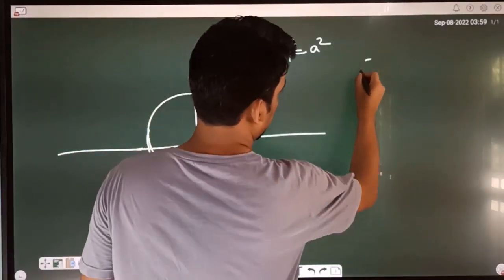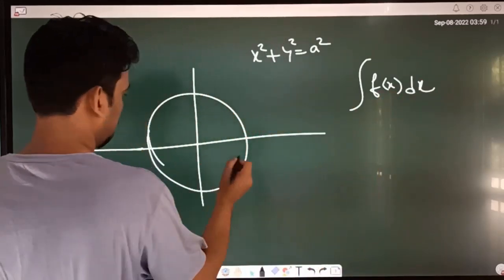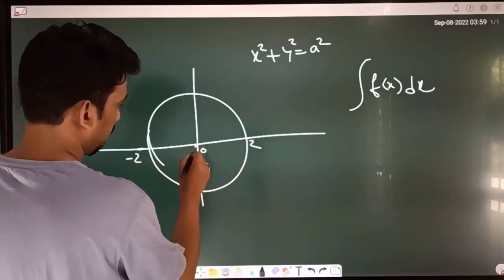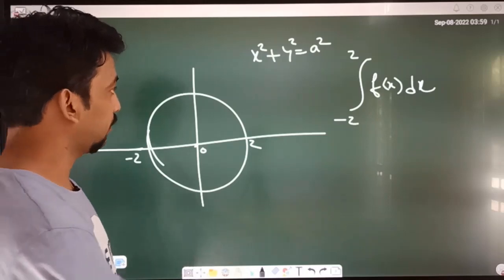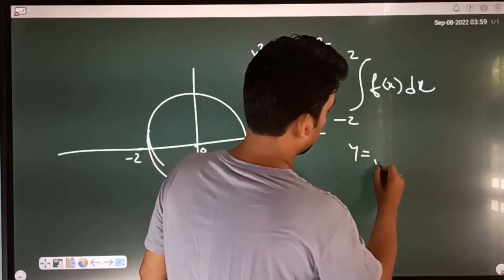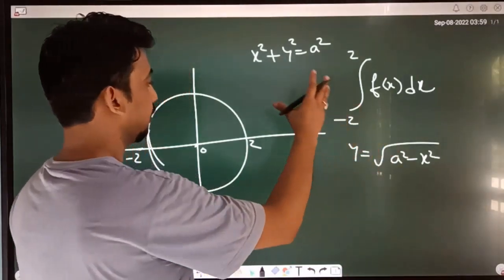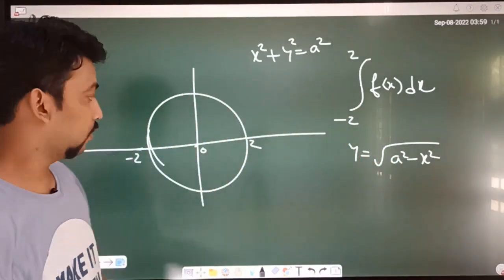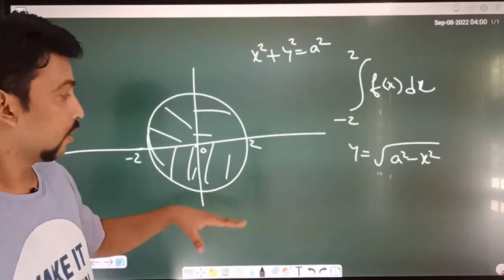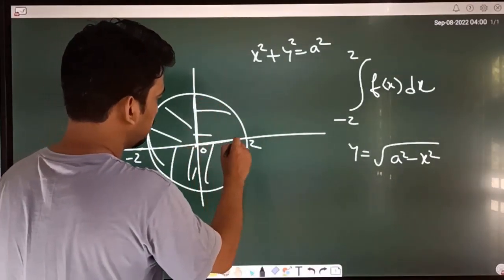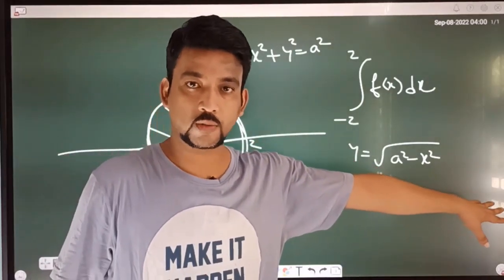Find the integral of f(x)dx from minus 2 to 2, where f(x) represents the circle. So y equals the square root of a squared minus x squared. Y is evaluated from minus 2 to 2. The circle is centered at the origin. We represent this equation: y equals root of a squared minus x squared.